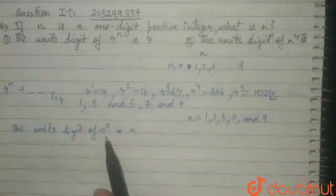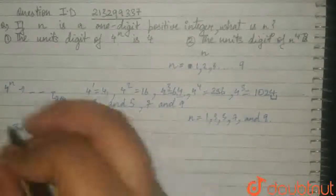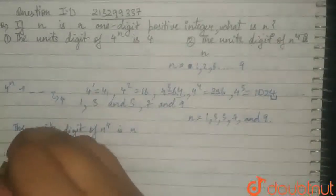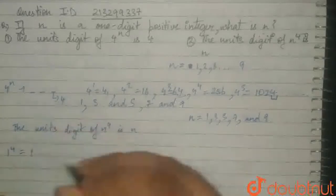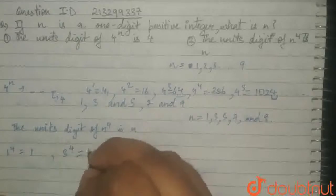So, we have 5 values. Let's test them all. 1 raised to the power of 4 is 1. 3 raised to the power of 4 is 81.